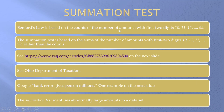Benford's Law is based on the counts. We simply count how many numbers start with 10, 11, 12, all the way up to 99. The summation test takes those same numbers, but instead of counting them, it sums them.